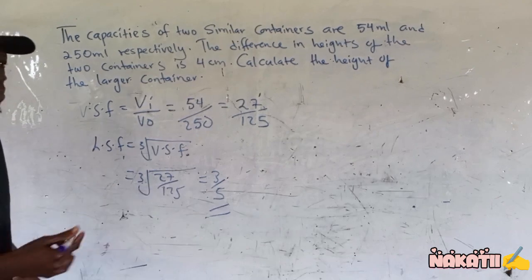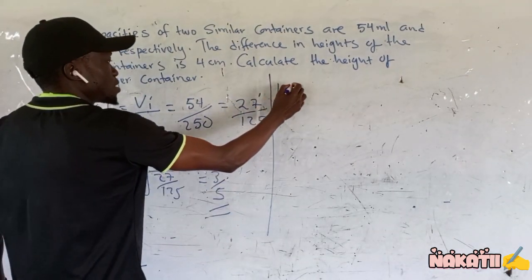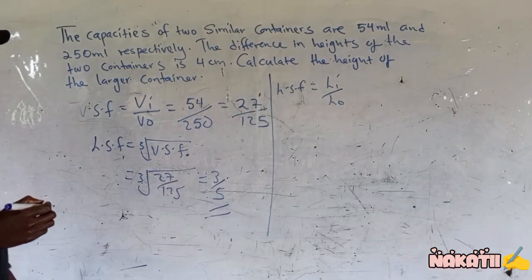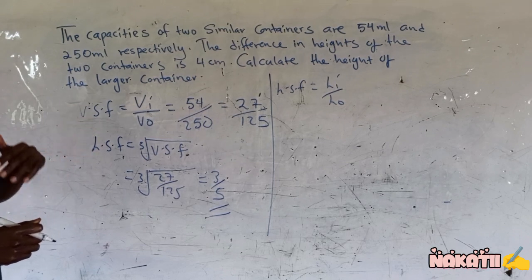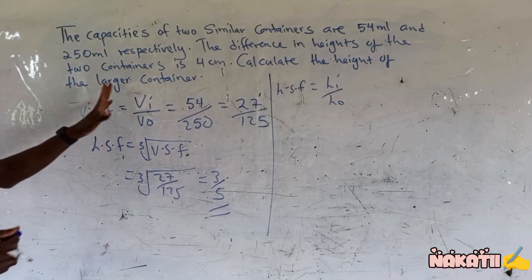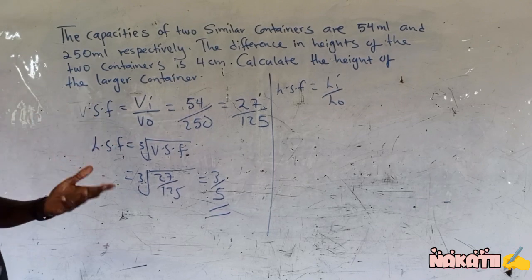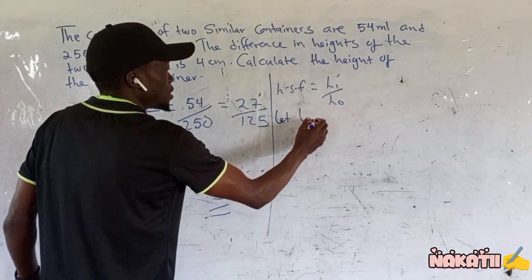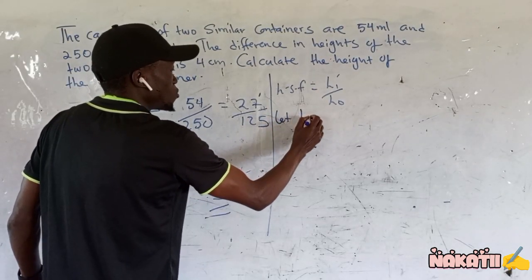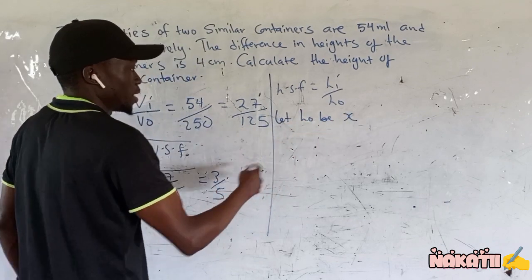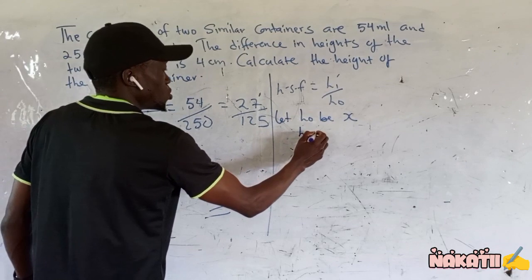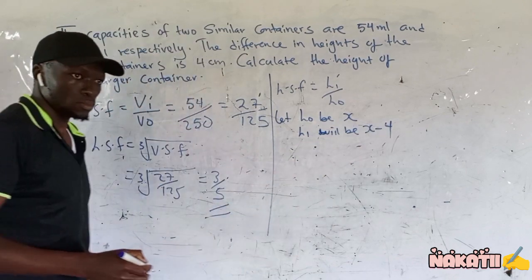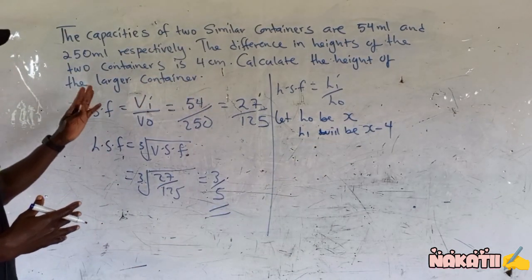This is our linear scale factor. We know that linear scale factor is simply length of image divided by length of object. Let the length of the object, which is the length of the larger container, be x. Then the length of the image will be x minus 4, because the difference in height is 4.